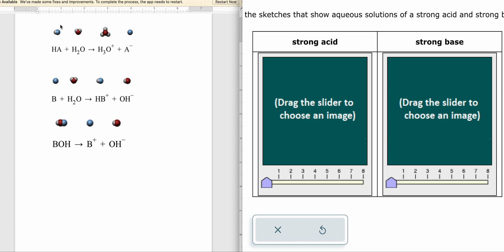If this is a strong acid, you're gonna have all this HA breaking apart into H plus and A minus.